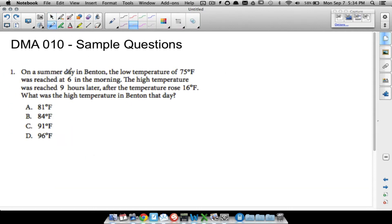First one: On a summer day in Benton, the low temperature of 75°F was reached at 6 in the morning. The high temperature was reached nine hours later after the temperature rose 16°F. What was the high temperature in Benton that day? Sometimes there's extra information - the 6 in the morning and nine hours later honestly don't matter. The low temperature was at 75°F and it rose 16°F. That does not mean the temperature was 16 degrees. It rose 16 degrees from the 75, so you add these two numbers together.